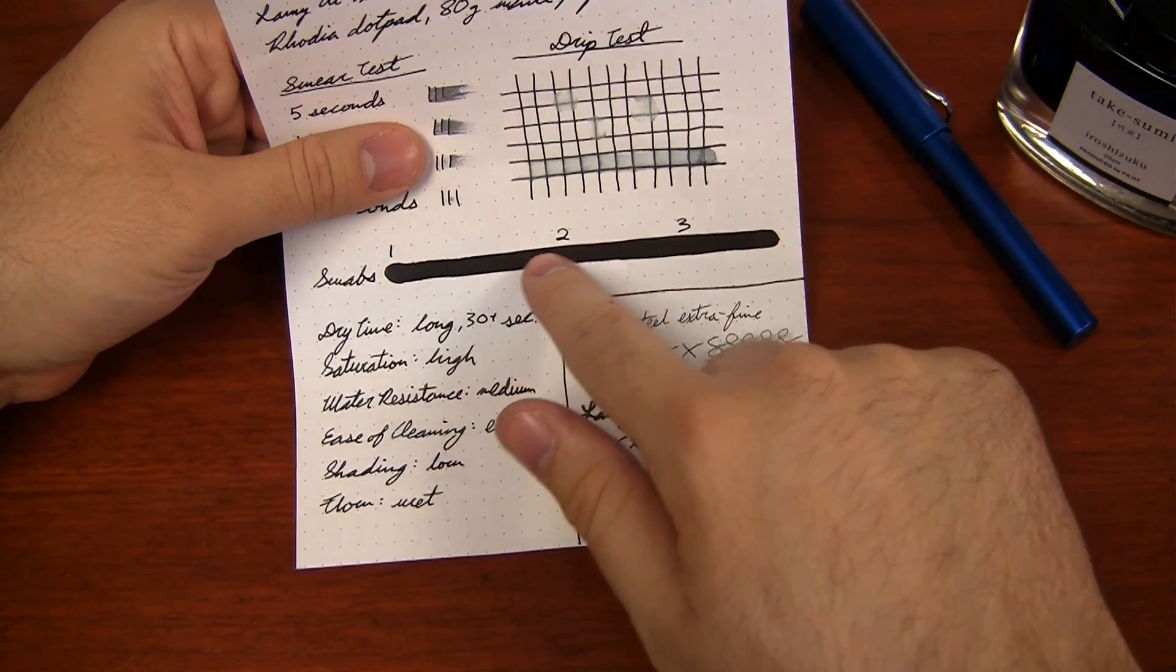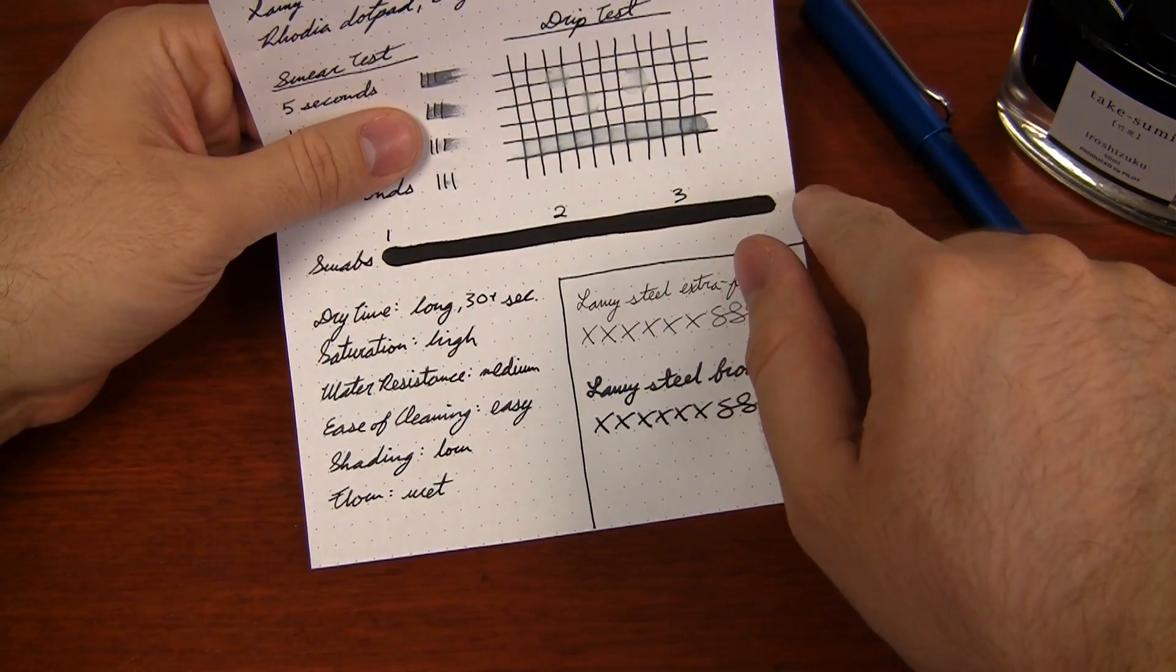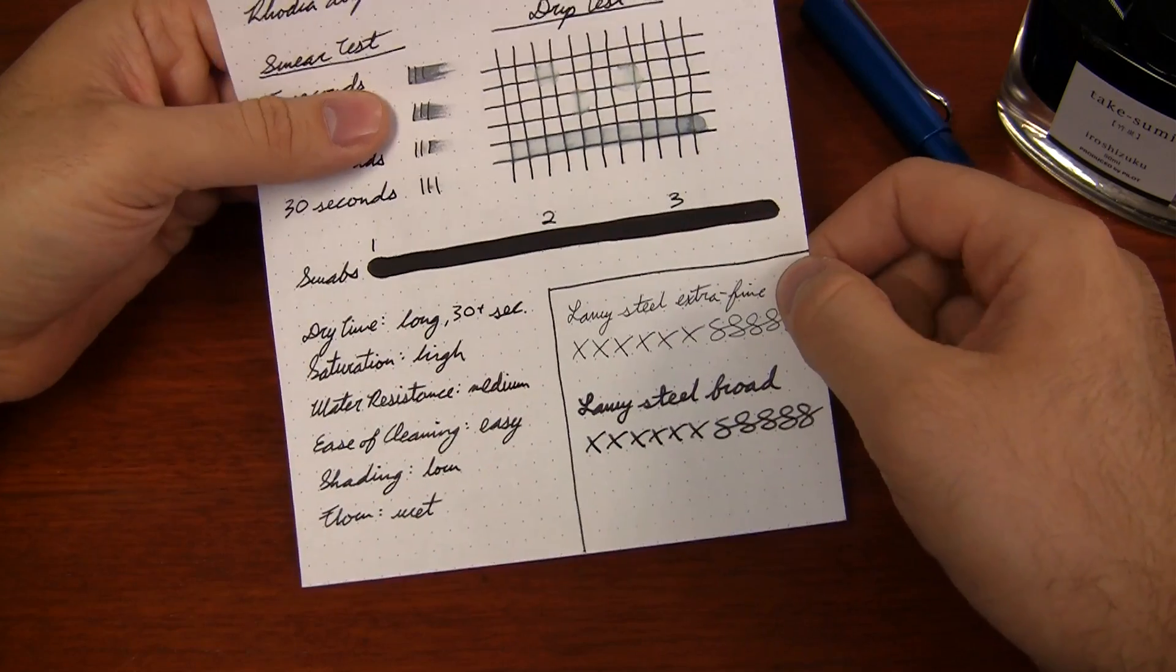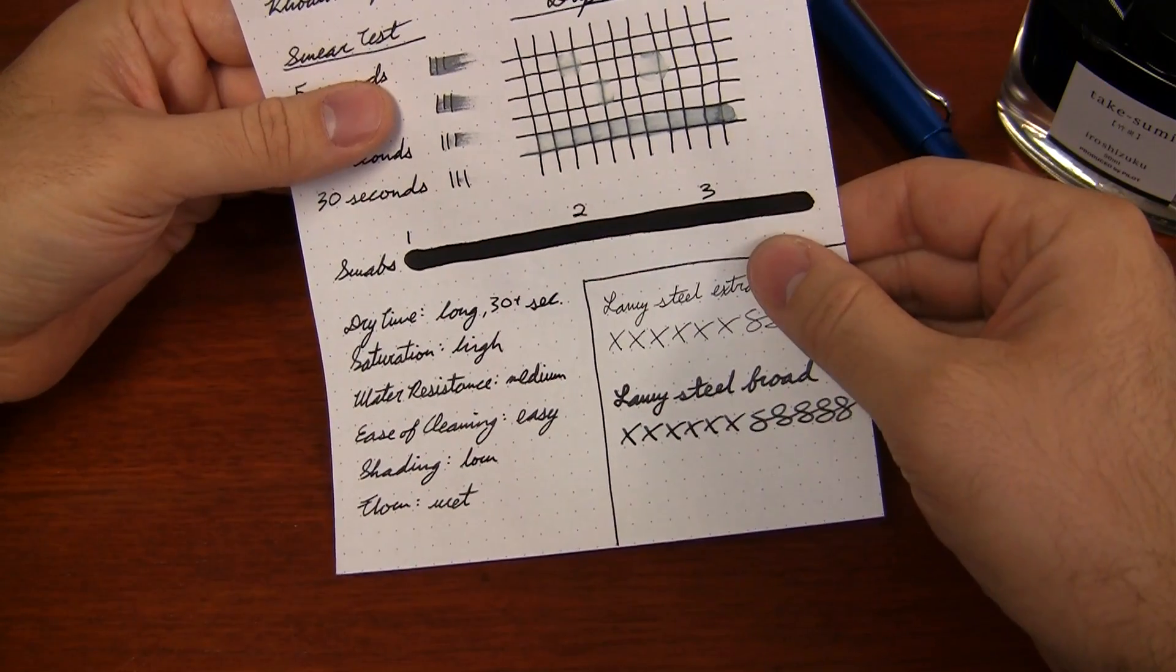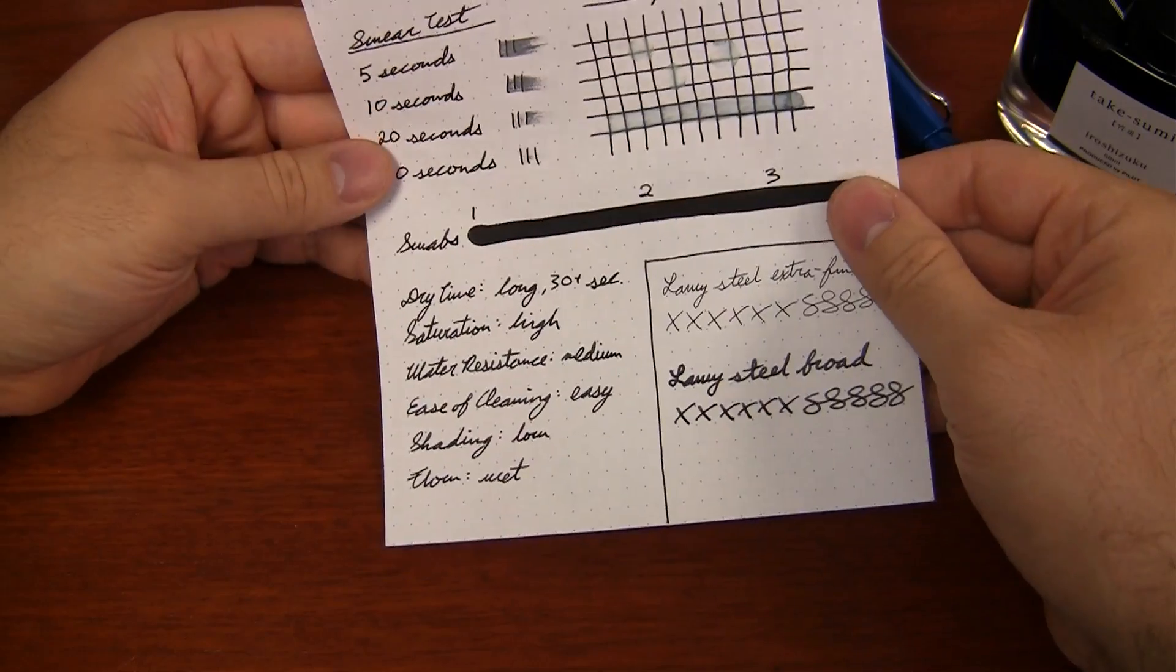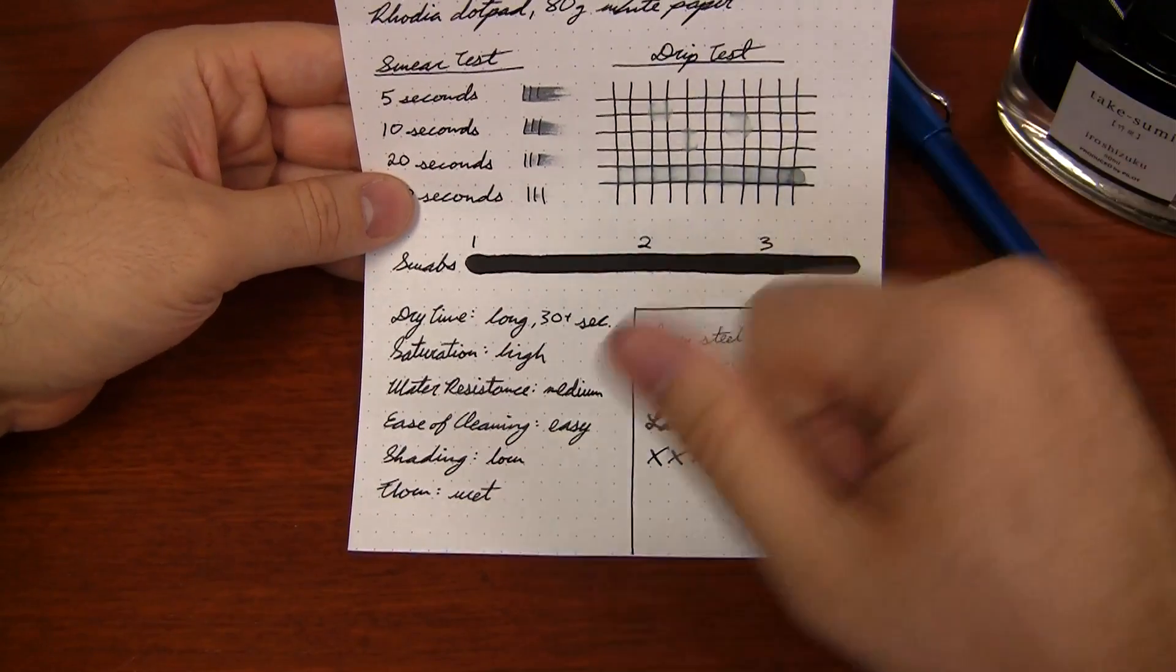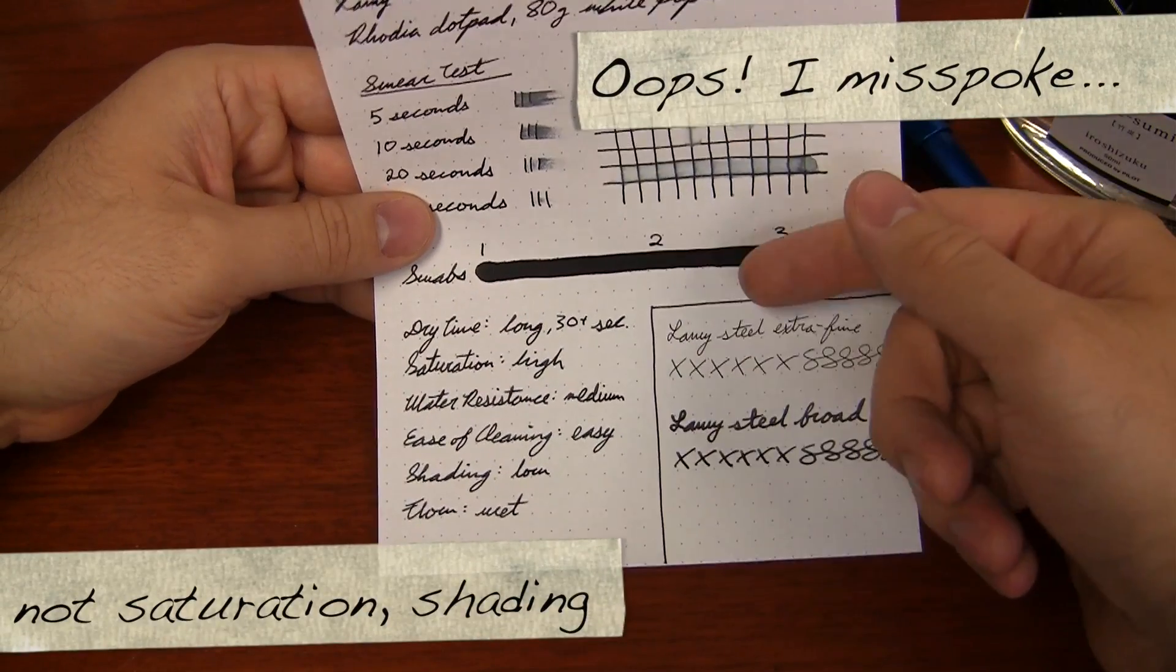You can see how saturated it is by the fact that I did a single swab and then a second swab and then a third swab, and you really can't tell the difference between the first and the third swab. It's just straight black. There's really no shading to it at all. So for those of you that like very little saturation or no saturation at all in your inks, you're going to like the way that this performs.